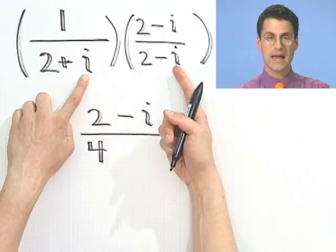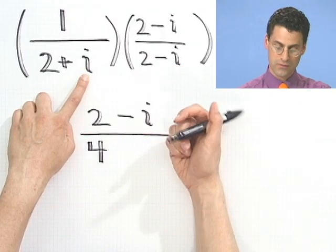That always is supposed to happen. If you're multiplying by the correct conjugate and do the multiplication correctly, you should always get those middle terms, outside and inside terms, to drop out. The last term is going to be minus i squared, which is plus 1.